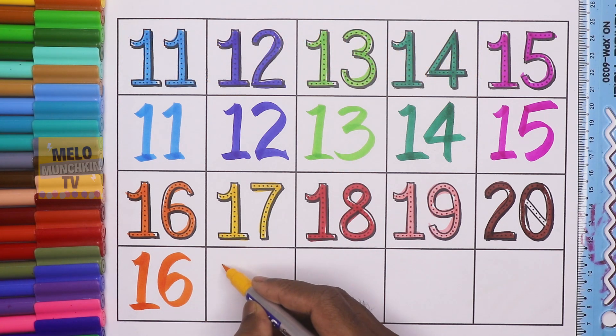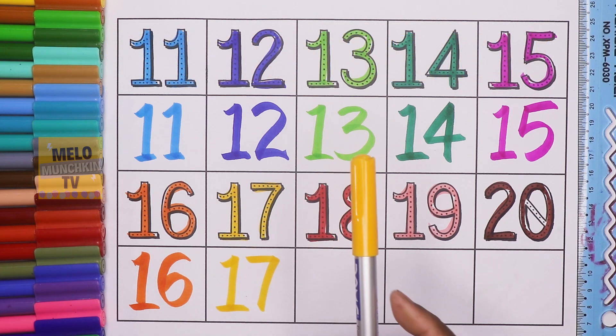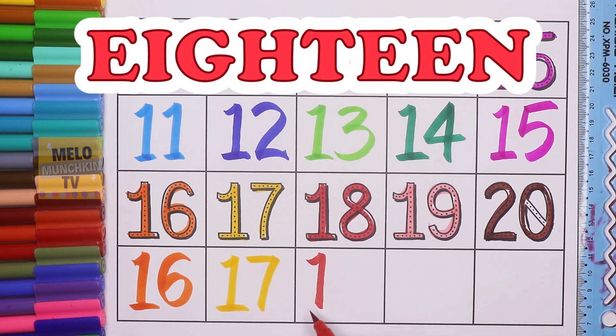This is orange color. 17, S, E, V, E, N, T, E, N, 17. This is yellow color. 18, E, I, G, H, T, E, N, 18.